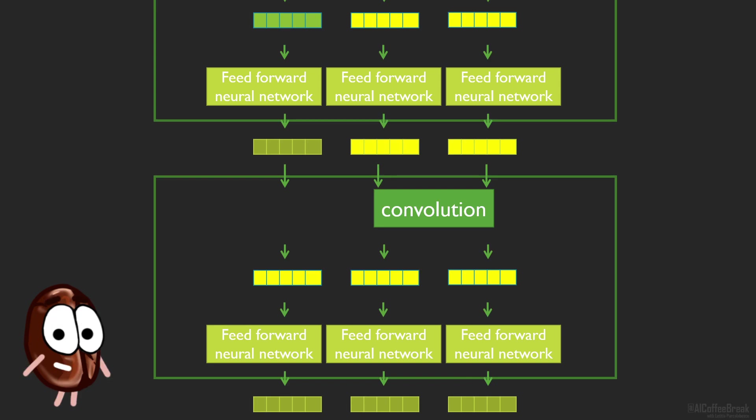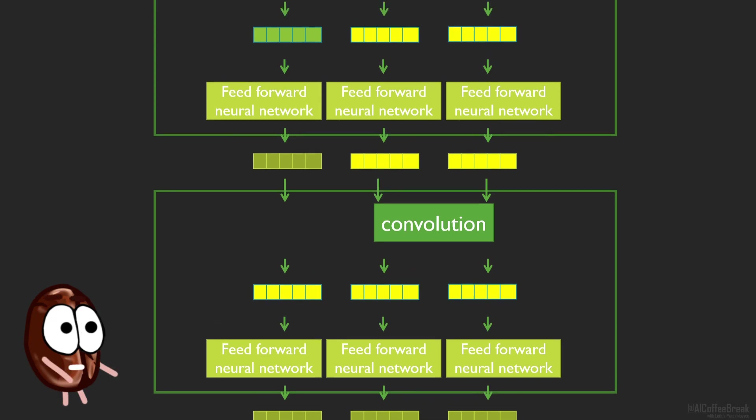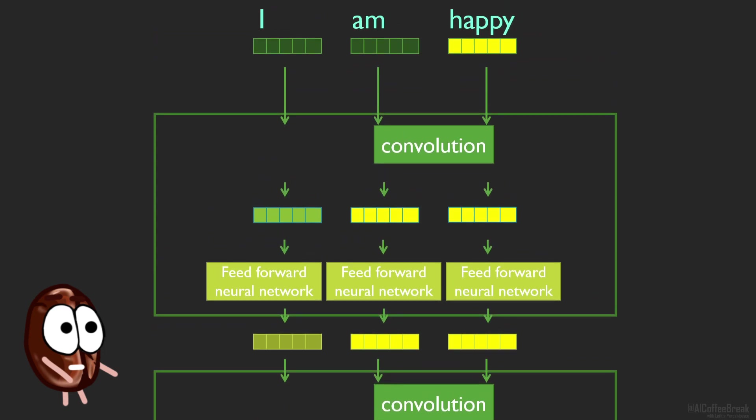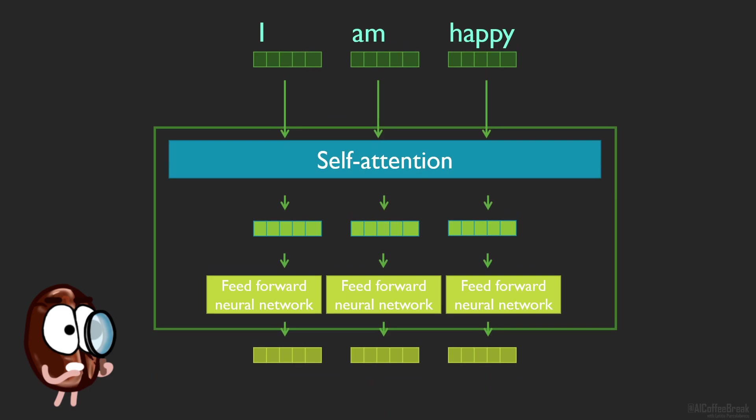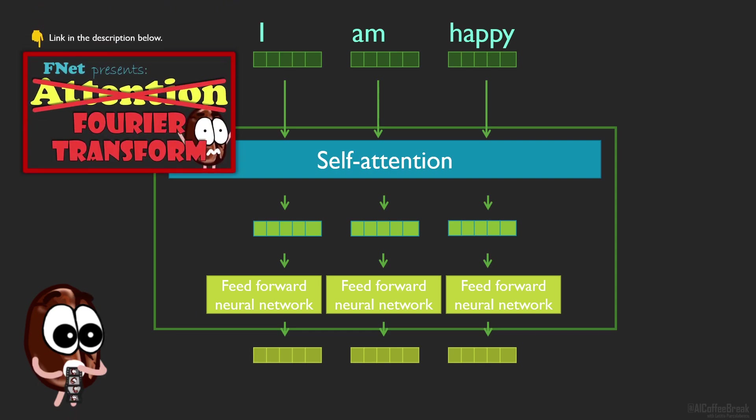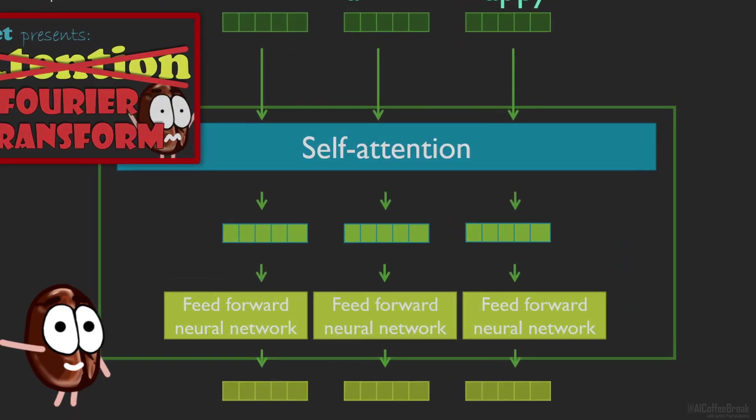But if we're going to replace things with convolutions, what about attention making the transformer so powerful? Well, does it really? There have been papers recently showing that replacing learned attention matrices with random matrices does not hurt much, and papers replacing the self-attention layer with an MLP layer or even with a Fourier transform.